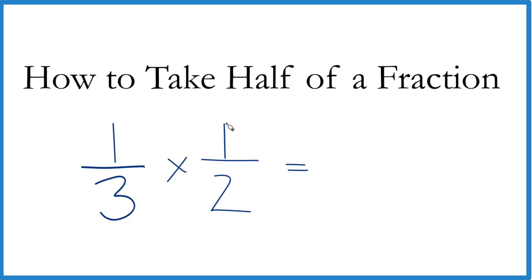It's pretty easy to multiply fractions. One times one is one, three times two is six, and half of one-third, that's one-sixth. If you doubled one-sixth, you'd end up with one-third.